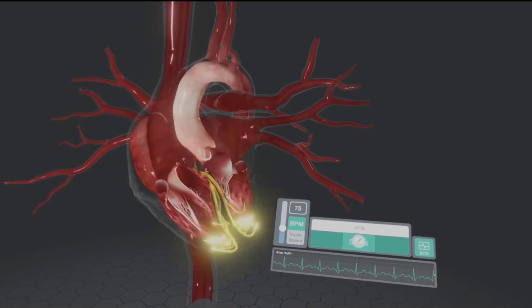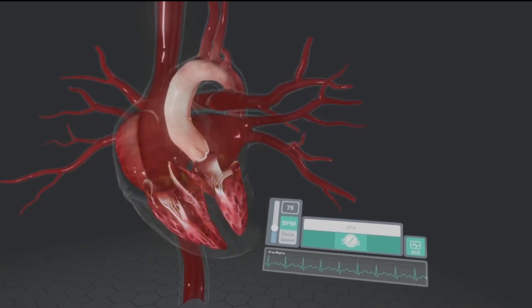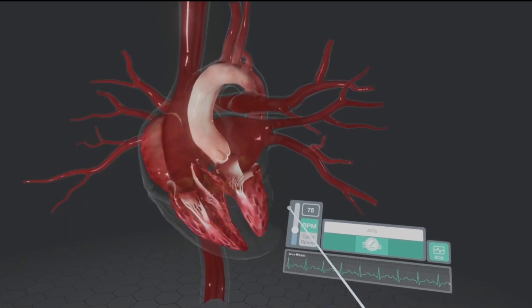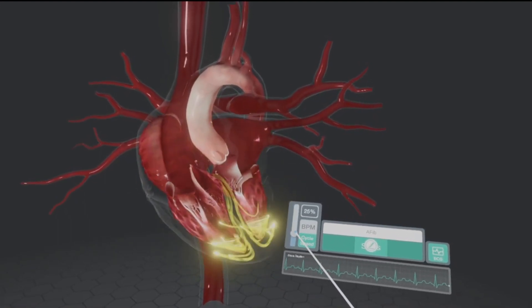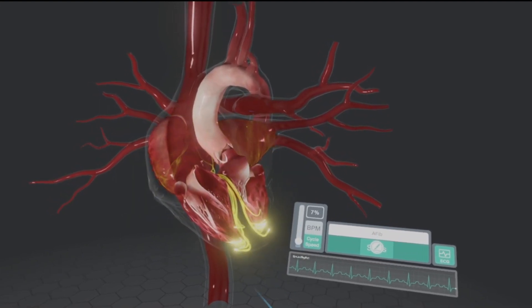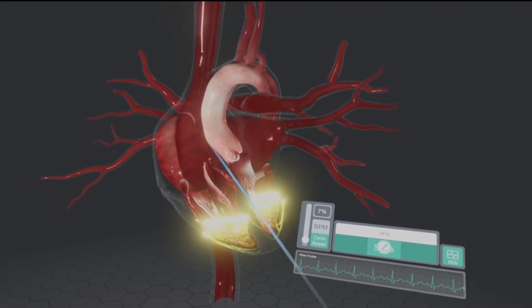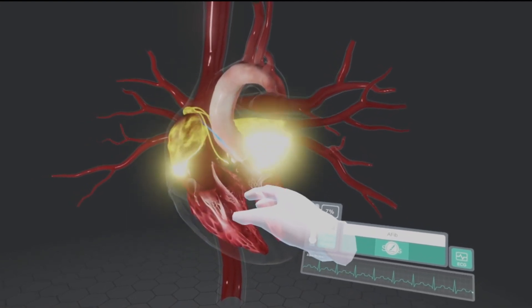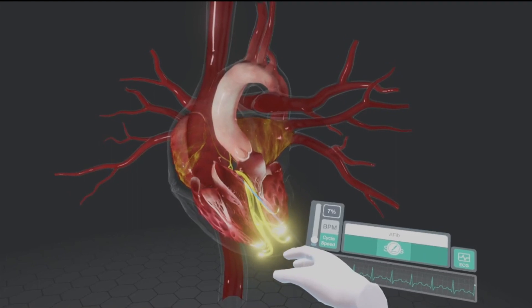So remember that we are considering the atrial kick in our lesson today. And I want to slow down the cycle speed of this so we can get a good idea of what I'm talking about. Let's set it down to about 7%. So right here, we're going to be talking about the SA node, going down to the AV node.